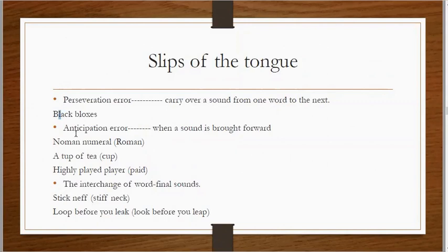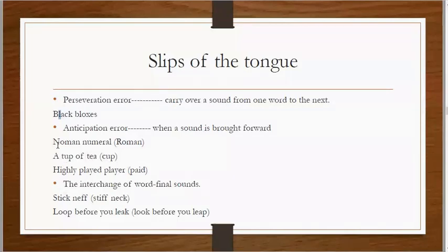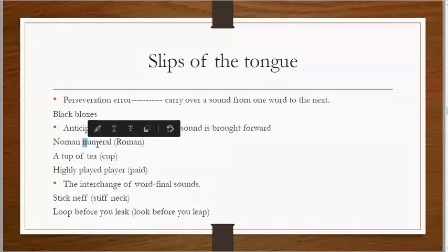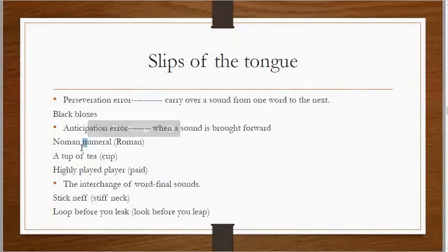Similarly, instead of carrying over, we can commit an anticipation error, where a sound is brought forward. We take a sound from the second word and bring it to the first word. For example, 'norman numeral' — it should have been 'roman numeral,' but the 'n' sound was replaced because of anticipation of the following word starting with 'n,' so we produced 'norman numeral.'